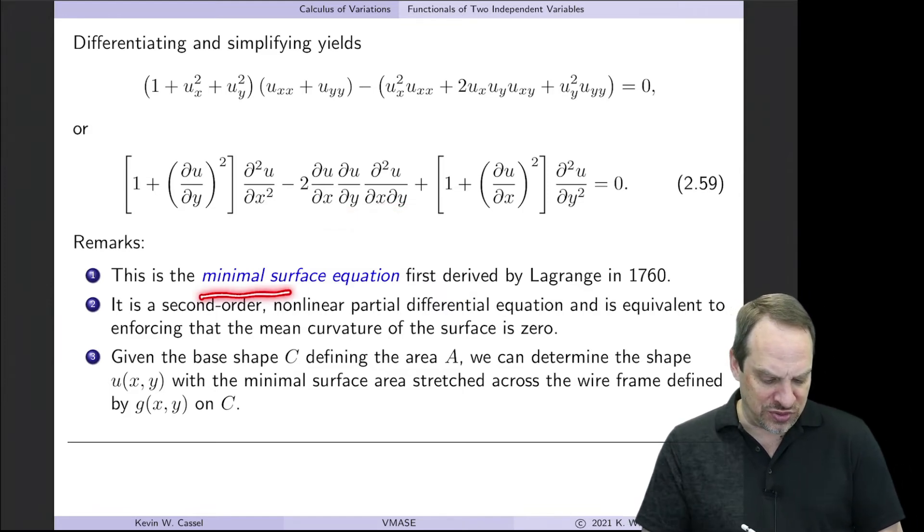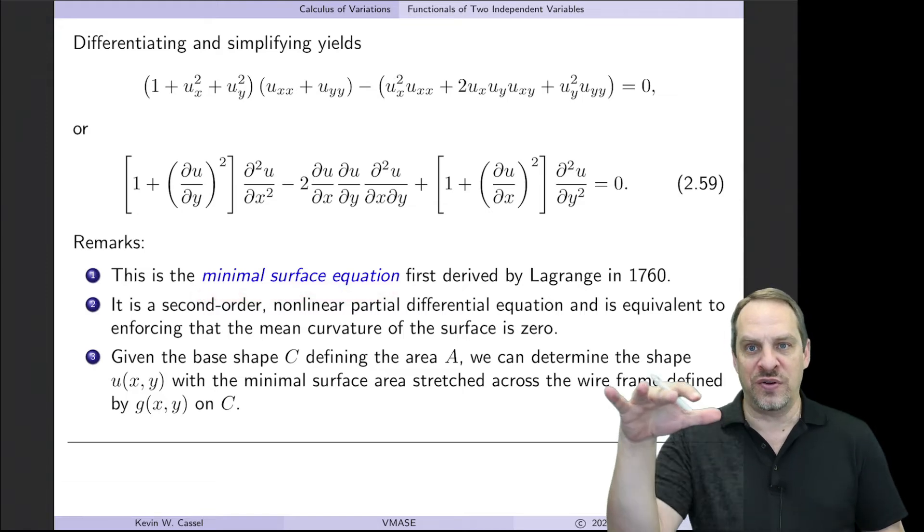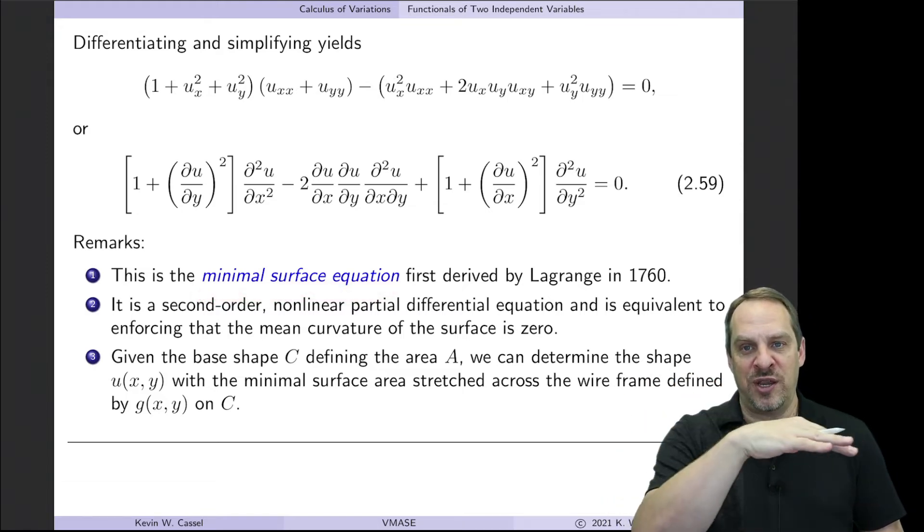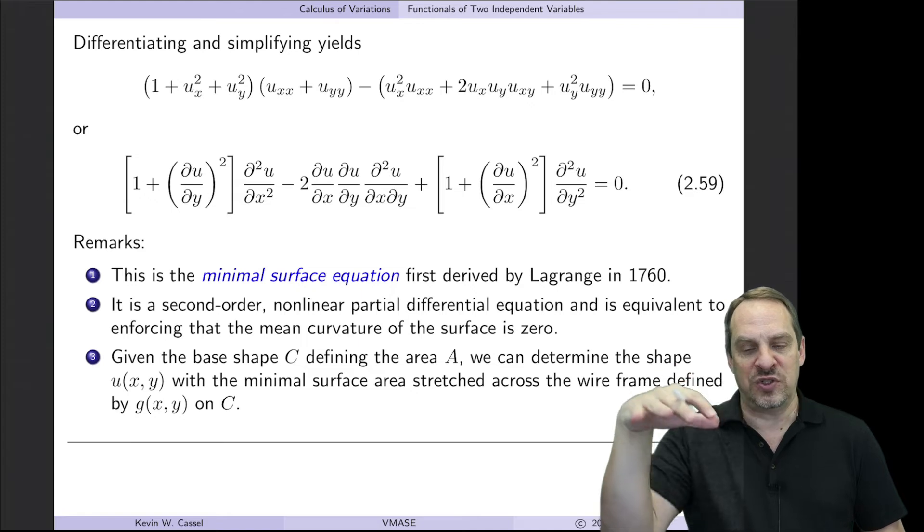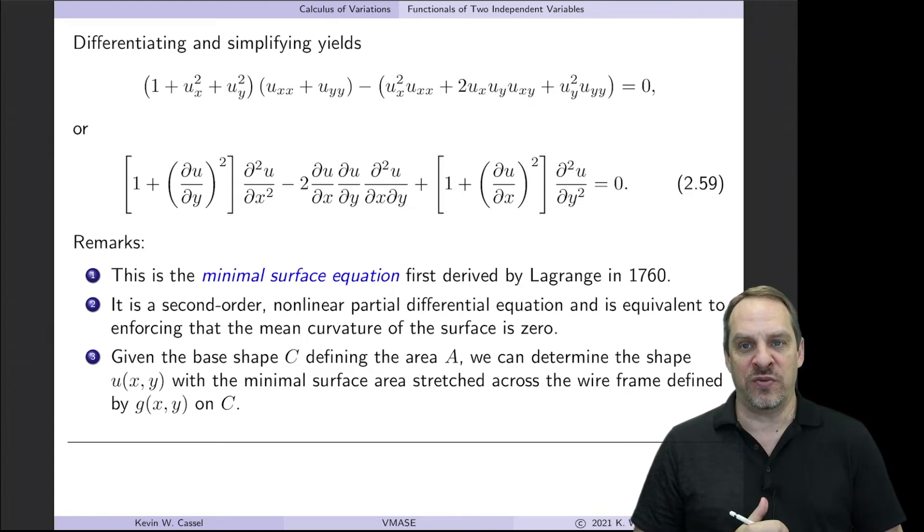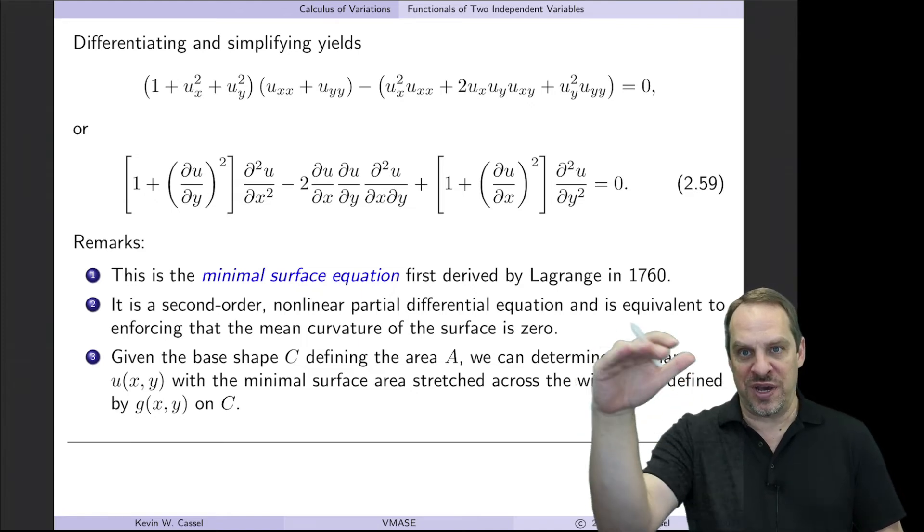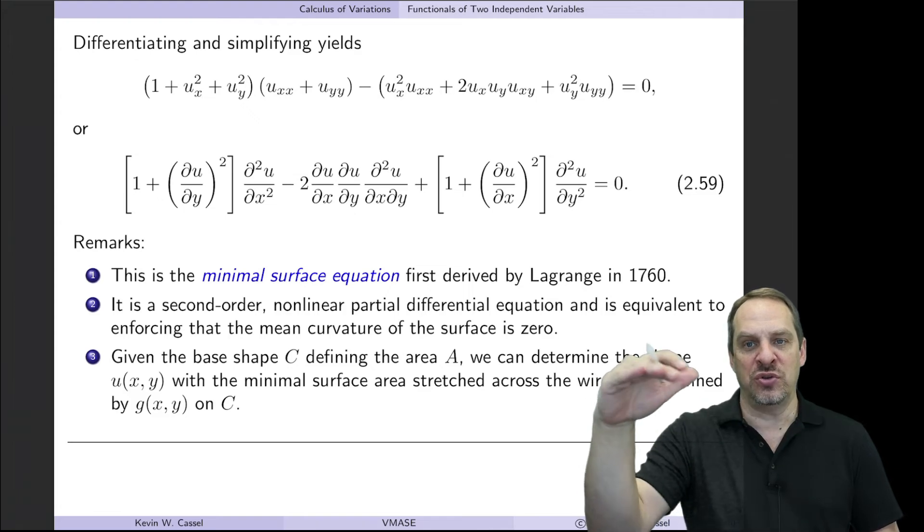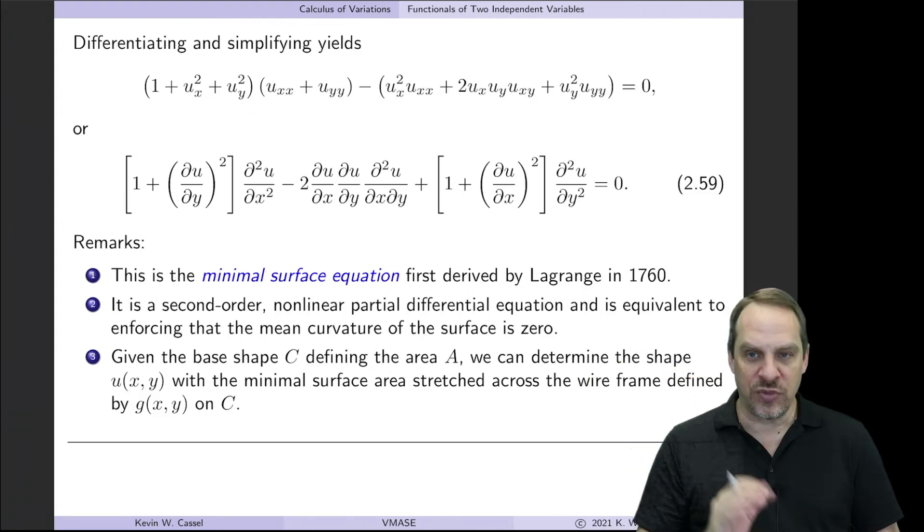So this is the minimal surface equation. u of xy would be the shape of the soap film that spans between this wire frame, given the boundary conditions, which would be u as a function of x, y, all the way around the bounding curve c.